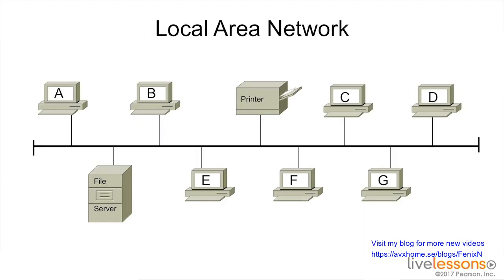Previously we talked about the fact that if we took a thousand devices and put them all on the same network, we would have less than optimum communication. Now we're going to talk about why that is. There are two reasons. First, a collision domain is a section of network where data packets can collide with one another when being sent on a shared medium.